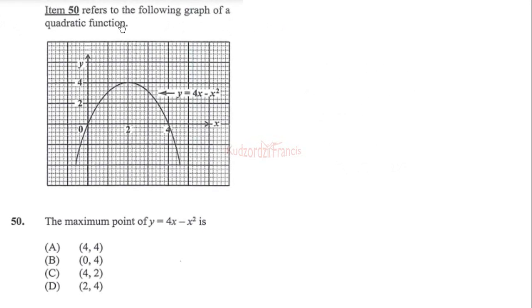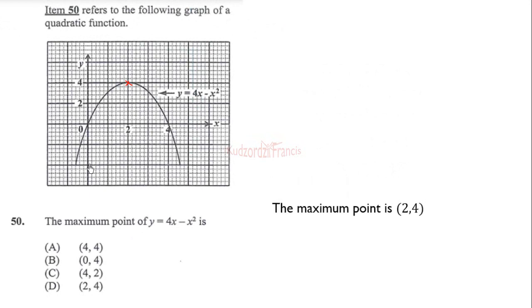Item 50 refers to a graph of a quadratic function. This is a quadratic function and the maximum point is shown on the graph. The coordinates of that maximum point are (2, 4), therefore the correct answer is option D.